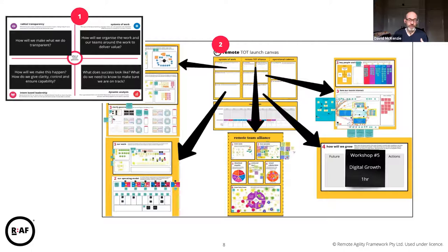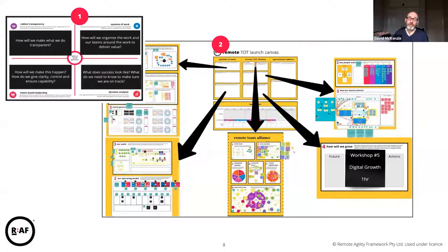Things like their strategy zone - how do they do strategy, what's their governance, what's the environment they work in. Their system of work is how their teams interact and what's their workflow. How do they want to track improvement? We start talking about success measures in the team of teams launch as well, which is really good for starting to talk about what data we need to capture and how we want to track value. So I find the team of teams launch is a strong basis for generating a whole bunch of information.